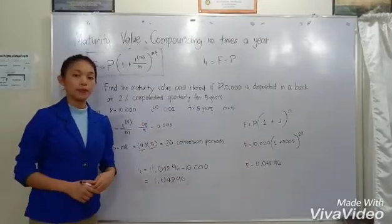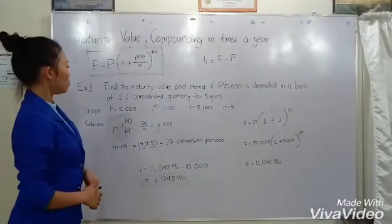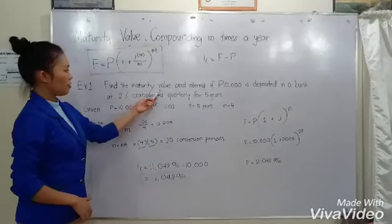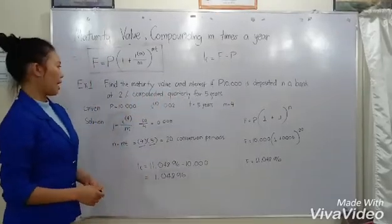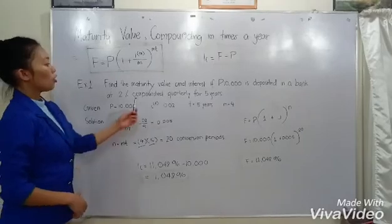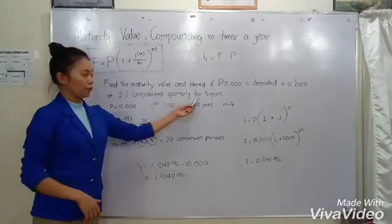And lastly, t as the term or time in years. For example 1, find the maturity value and interest if 10,000 is deposited in a bank at 2% compounded quarterly for 5 years.